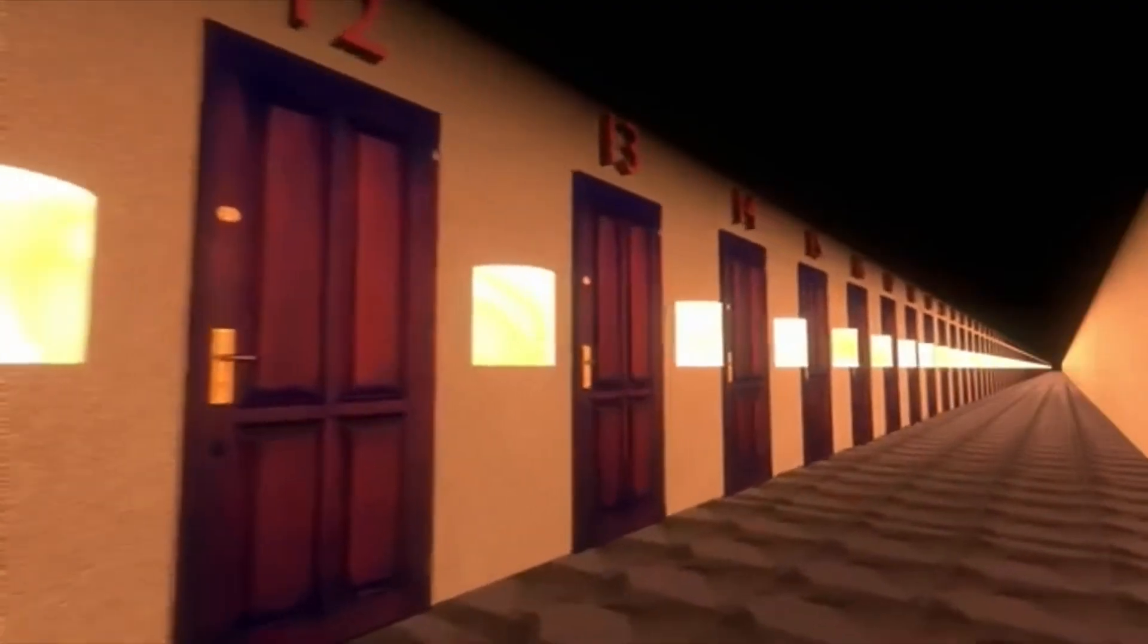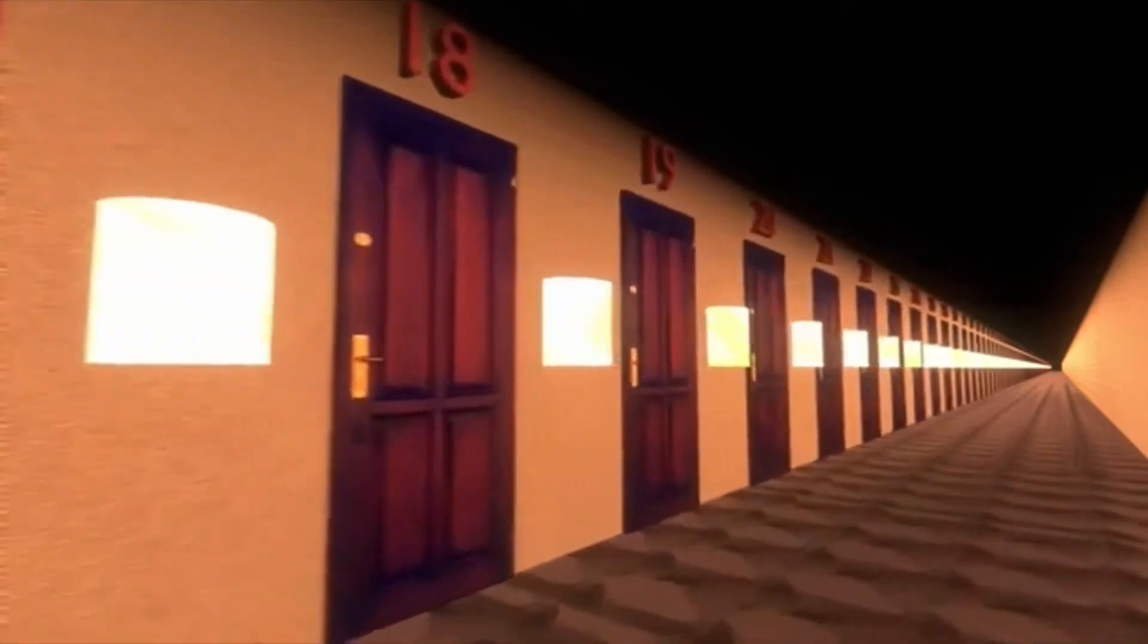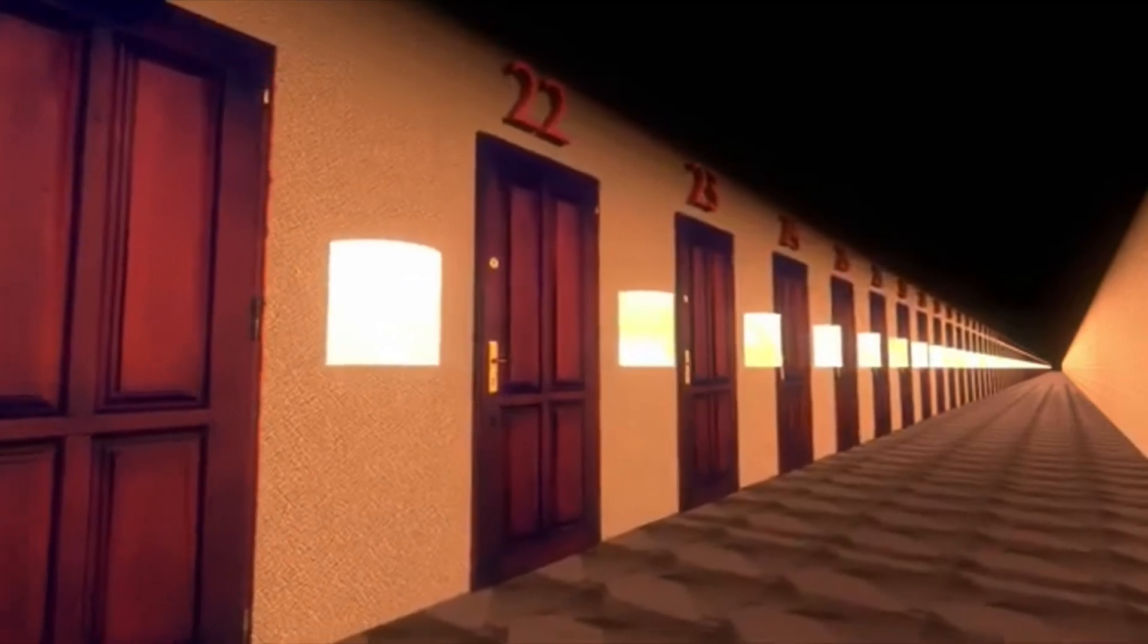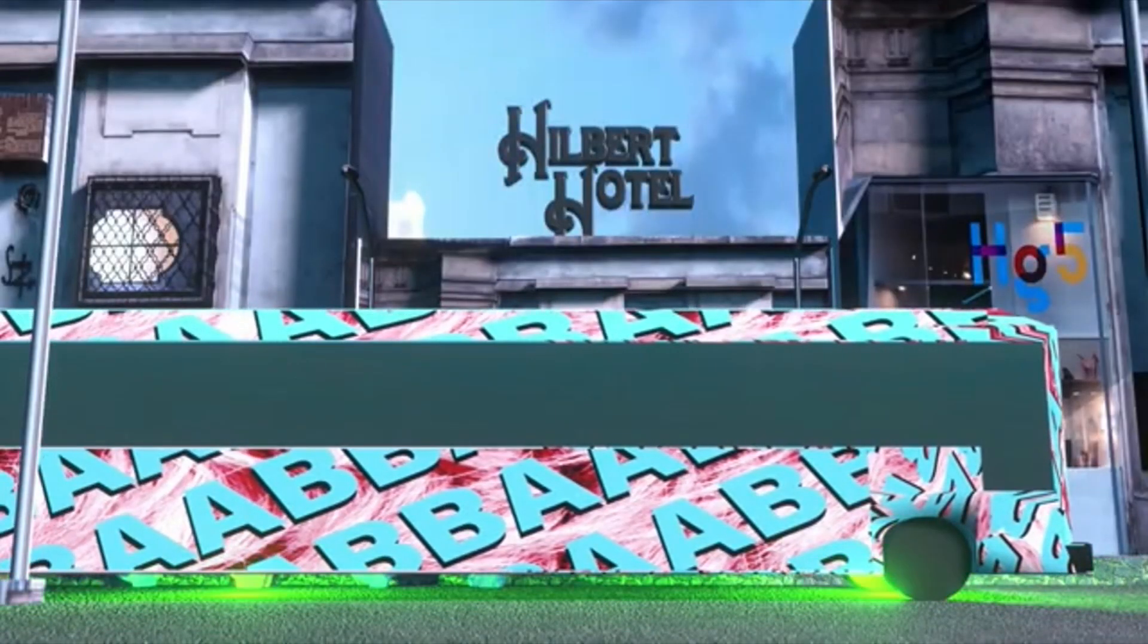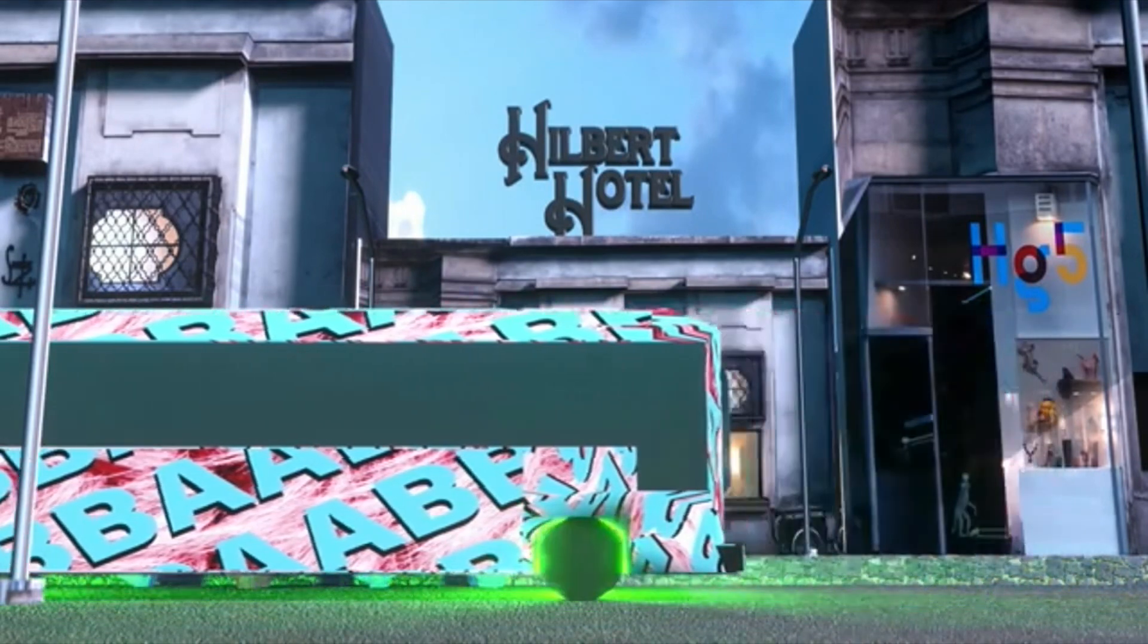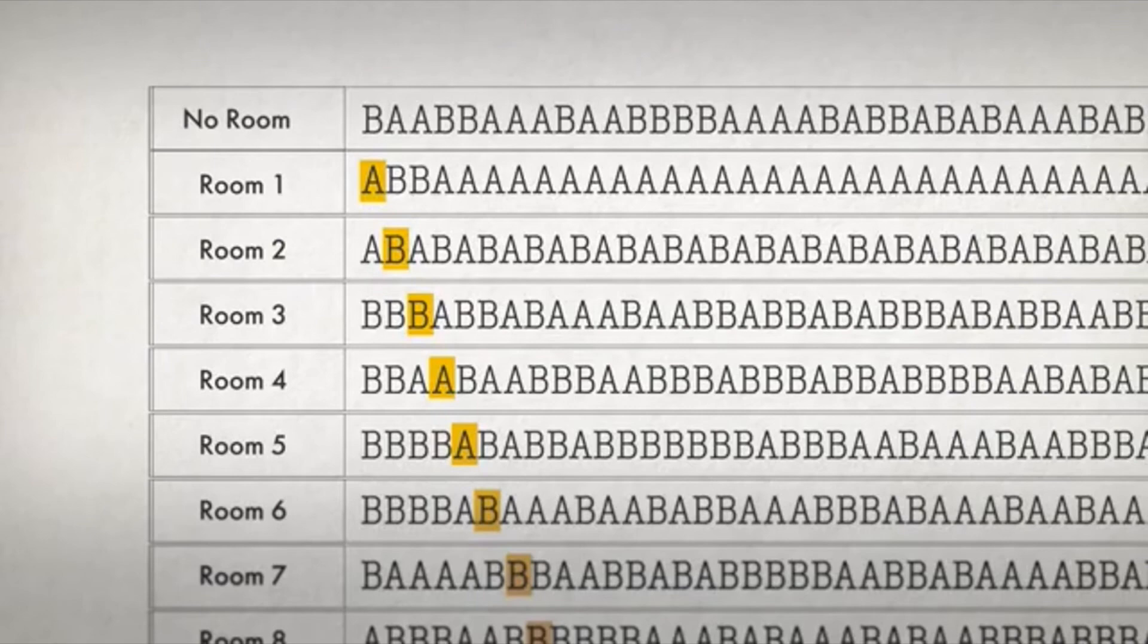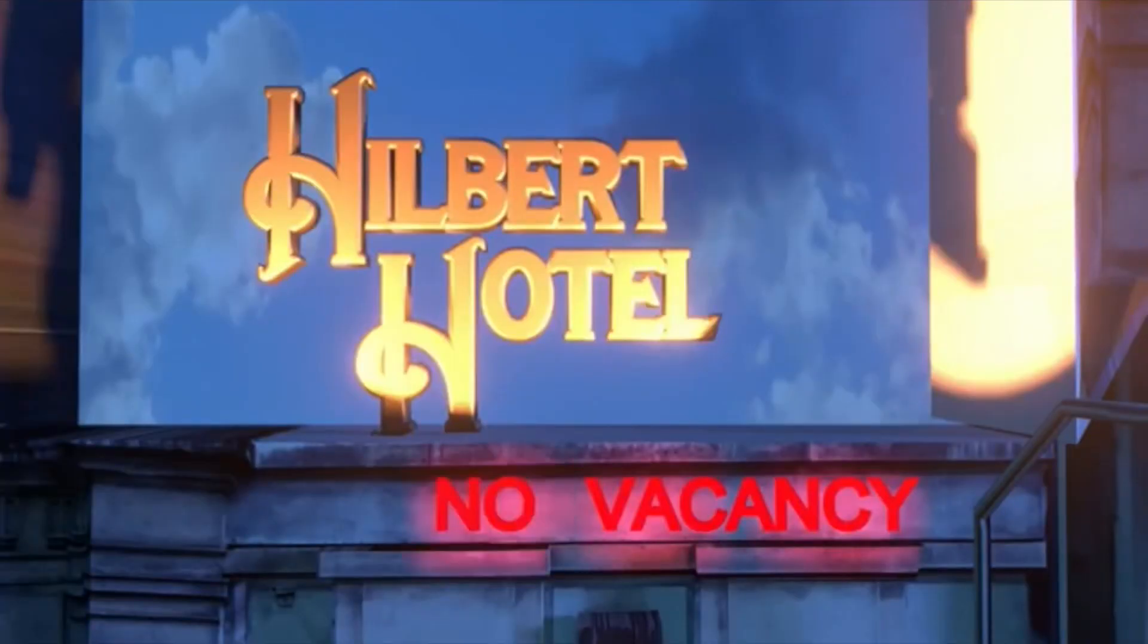The number of rooms in the Hilbert Hotel is infinite, sure, but it is countably infinite, meaning there are as many rooms as there are positive integers one to infinity. By contrast, the number of people on the bus is uncountably infinite. If you try to match up each one with an integer, you will still have people left over. Some infinities are bigger than others. So there's a limit to the people that you can fit.